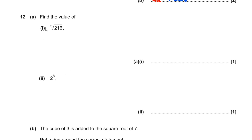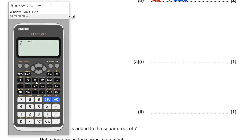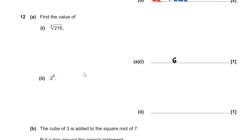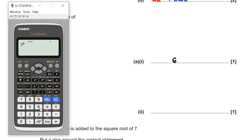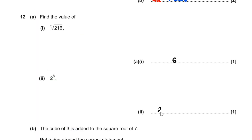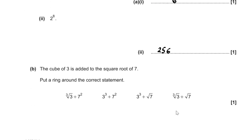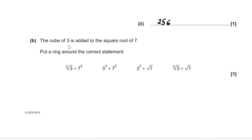Question 12. For part A, the cube root of 216 is 6, and 2 to the power of 8 is 256. For part B, the cube of 3 is added to the square root of 7, so the correct statement involves 3³ + √7.